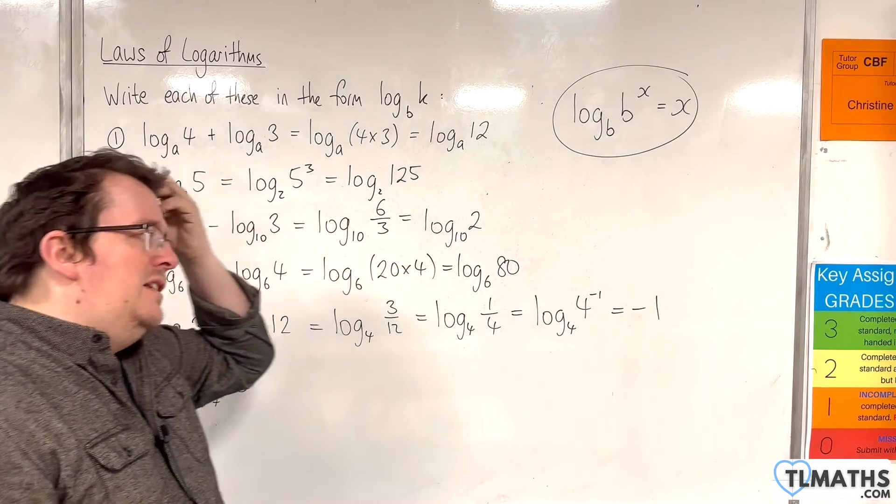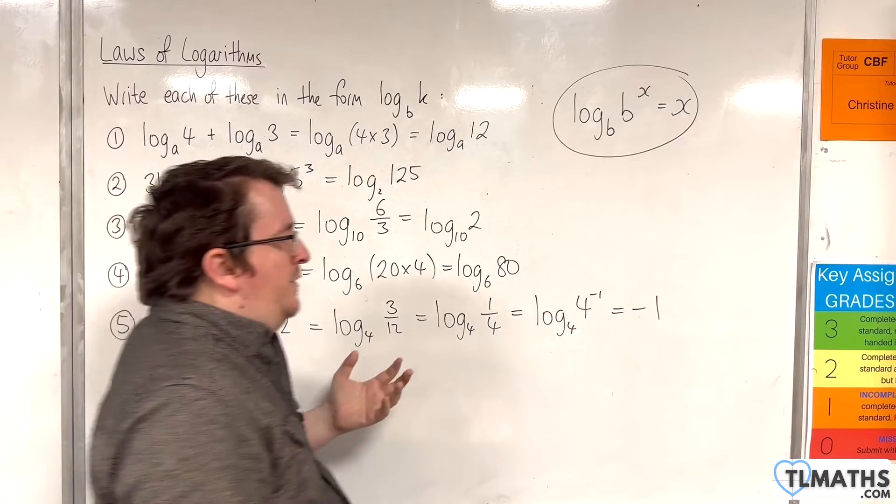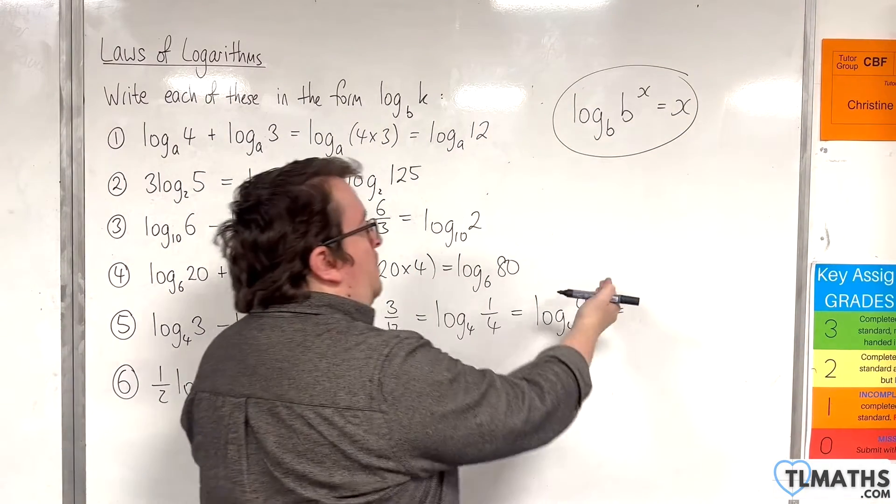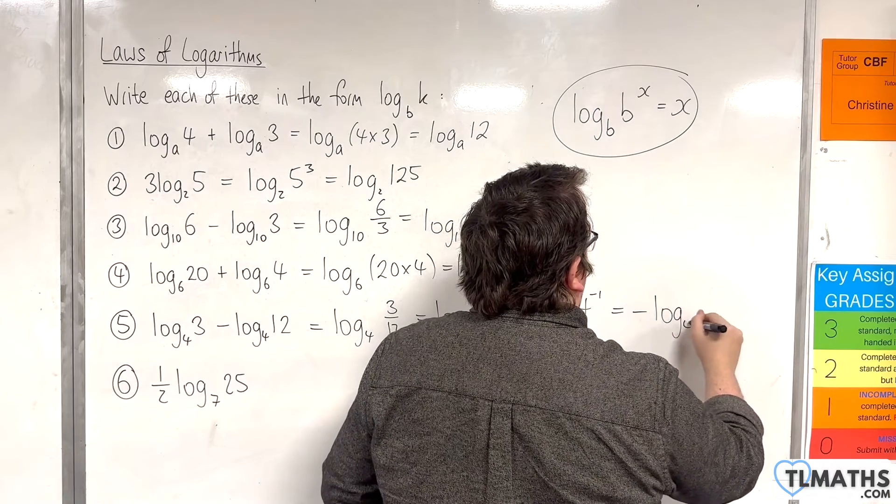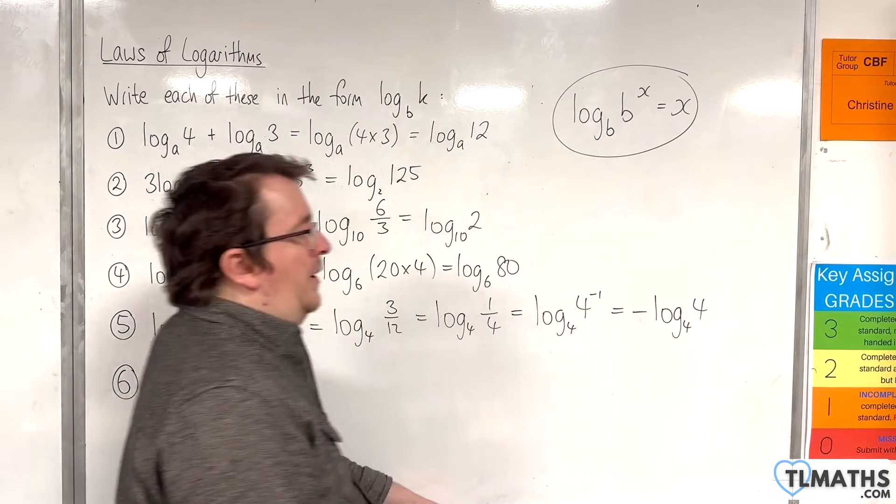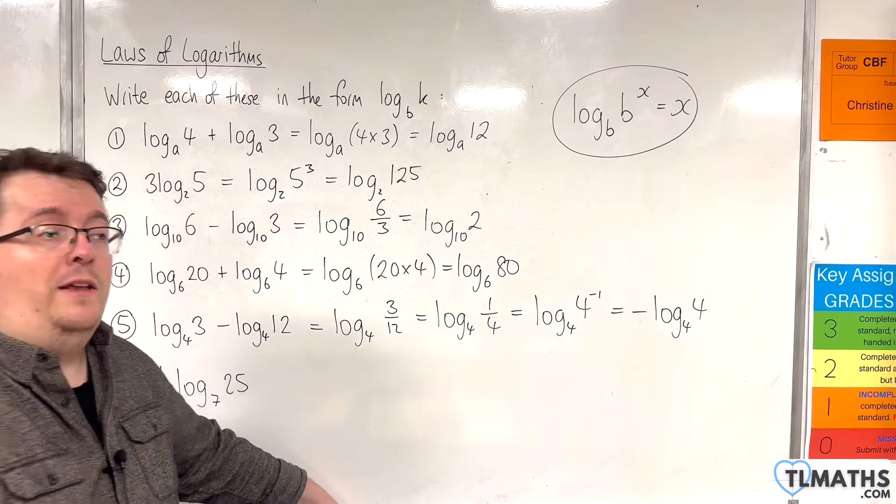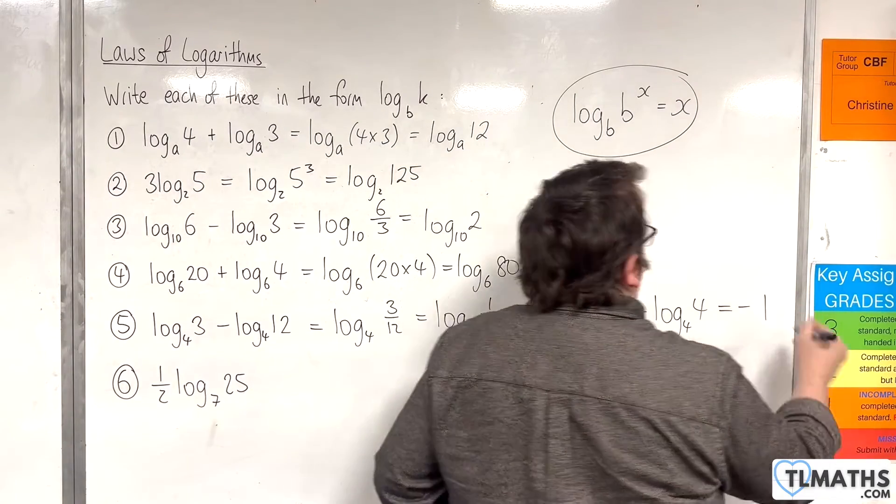Now you can take a couple of steps during that if you prefer. You could use the power rule to bring the minus sign down to the front. Like so. And log base 4 of 4 is of course 1. And so we get the negative 1 again.